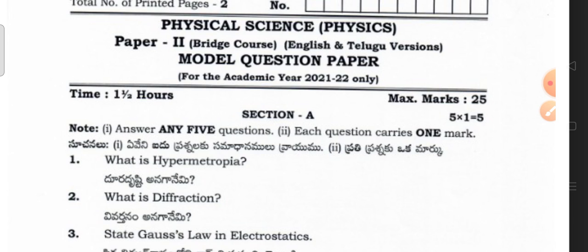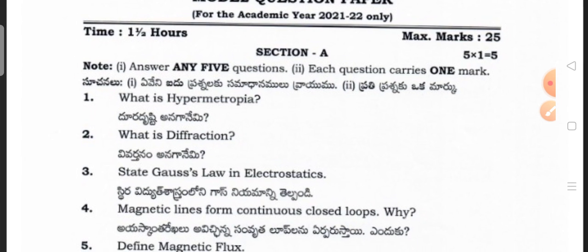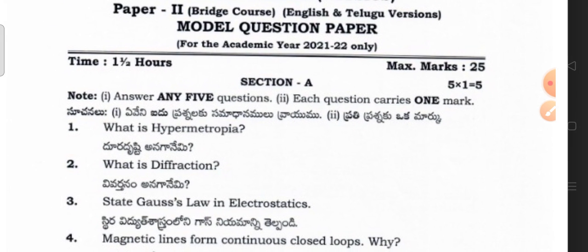Each paper will have 25 marks — physics 25 marks and chemistry 25 marks — making it overall 50 marks for the bridge course students. The questions come with 50% choice, so out of the given questions you choose which ones to attempt.